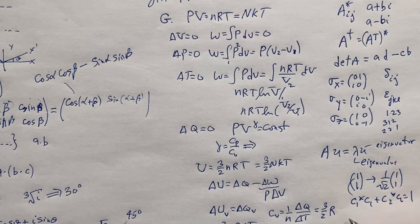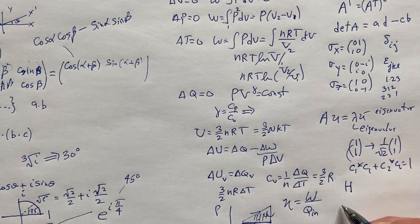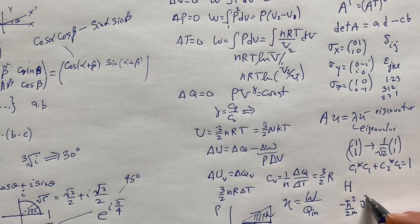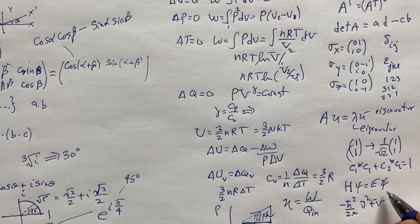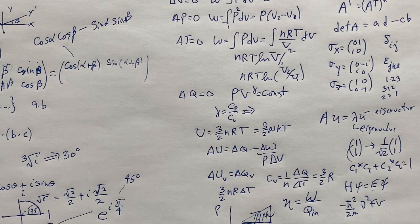In quantum mechanics, the Hamiltonian in the Schrödinger equation gives energy as the eigenvalue and returns the state as the eigenfunction. The angular momentum and cross-product material will be covered in your quantum mechanics course, so don't worry about that here.